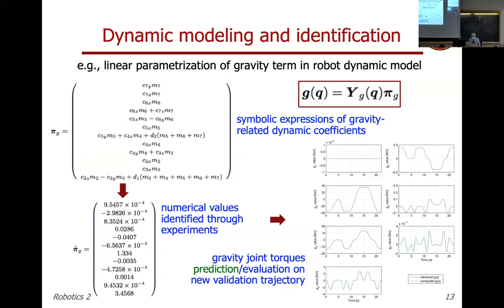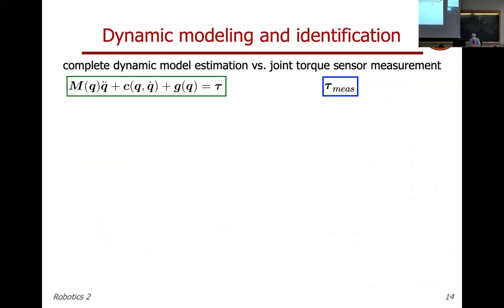Moving beyond gravity: the full dynamic model written on the blackboard takes the form M(q) q-double-dot + C(q, q-dot) q-dot + g(q) = τ, where M(q) is the configuration-dependent inertia matrix, C contains the Coriolis and centrifugal terms depending on velocity, g is gravity, and τ is the input torque from the motors. Each of these terms can be factorized for identification.